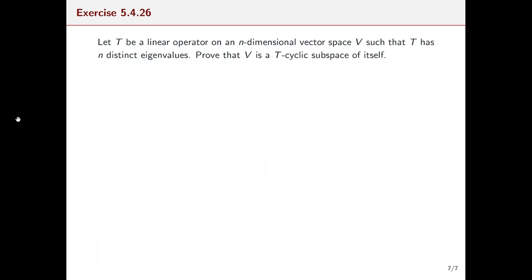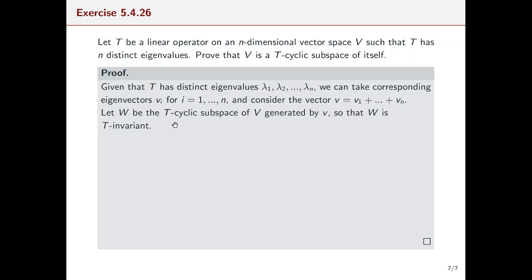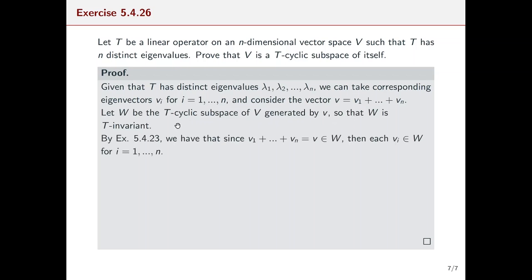Now we are ready to tackle this exercise. Let T be a linear operator on an n-dimensional vector space V such that T has n distinct eigenvalues. We want to show that V is a T-cyclic subspace of itself. Since T has n distinct eigenvalues, we take corresponding eigenvectors vᵢ and consider the vector v equal to their sum. We let W be the T-cyclic subspace of V generated by v, so W is T-invariant. Then by exercise 5.4.23, since v is in W, each eigenvector vᵢ is also in W.